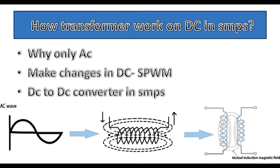In SMPS — that is, Switch Mode Power Supply — a high-frequency transformer is used, and it works on DC voltage. The question is: how does the transformer in SMPS work on DC voltage? I'm going to explain by showing how a change is made in DC using sinusoidal pulse width modulation, SPWM.